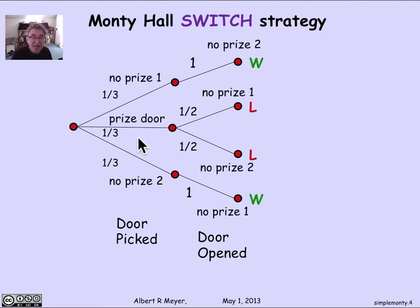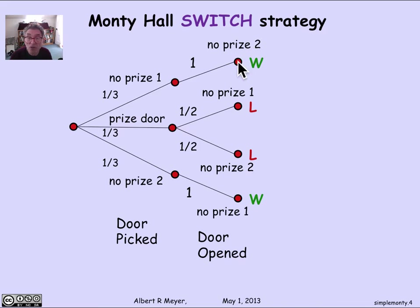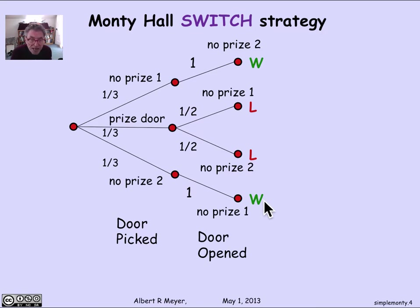If we reformulate it that way, the cases are: either the contestant picks the prize door, or they pick the first door that doesn't have the prize, or the second door without the prize — each with probability one-third. Once they've picked the first no-prize door, Carroll has only one door she can open, because the other unpicked door has the prize. If the contestant picks the prize door, Carroll can pick either of the non-prize doors, but both are losses. And if the contestant picks the second no-prize door, Carroll's move is forced and the contestant will win.